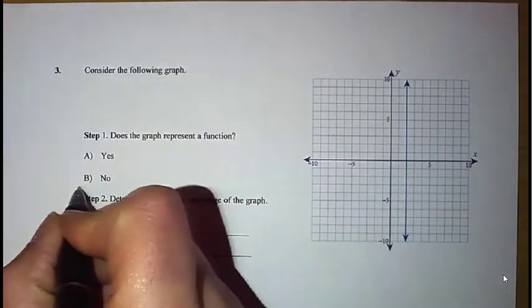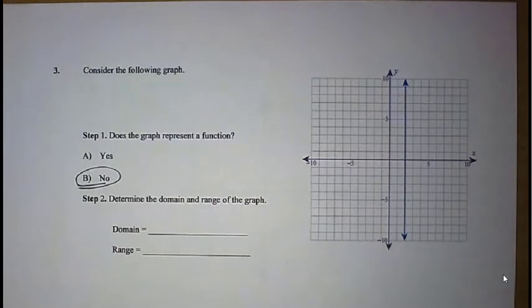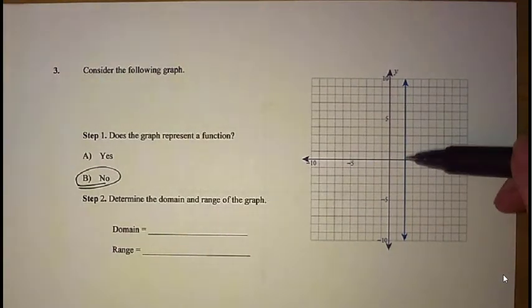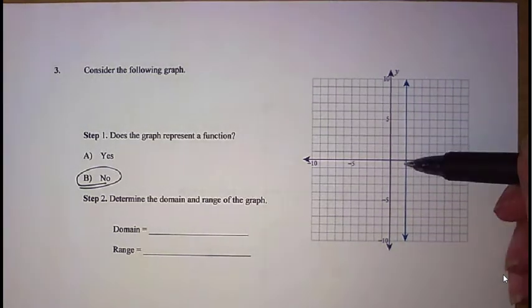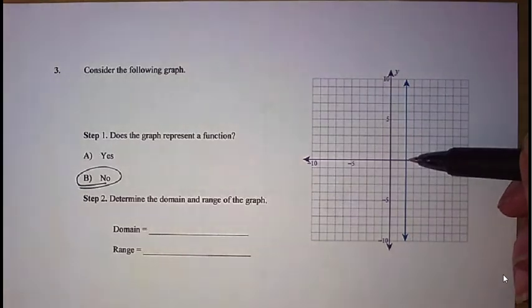Vertical lines are never considered a function because they would never pass the vertical line test since this one value of x corresponds to every value of y. And our rule is that the x can only correspond to one value of our y.